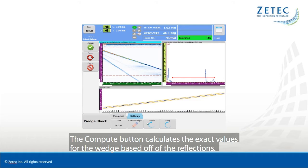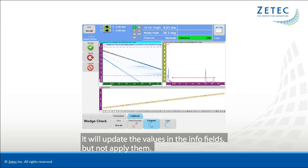The Compute button calculates the exact values for the wedge based off of the reflections. It will update the values in the Info fields, but not apply them.